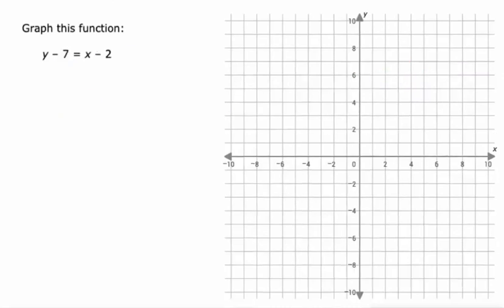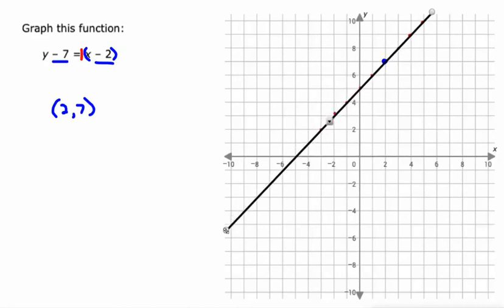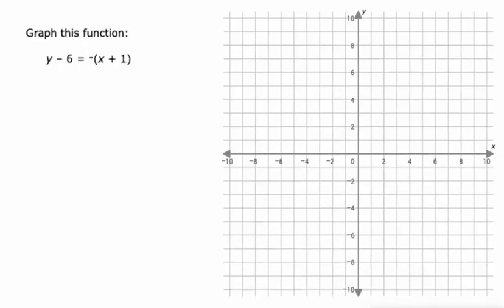What about this one? This one you could kind of look at it like that's a quantity being multiplied by one, so our slope is 1 and the point this runs through is (2, 7)—opposite of -2, opposite of -7. (2, 7) is right here. Slope of 1 just means up one, right one, or down one, left one. So a line that runs through the point (2, 7) with a slope of 1. Let's do one more.